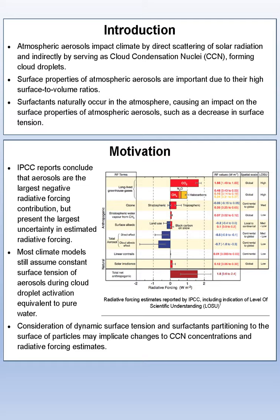To focus on the surface properties of atmospheric aerosols, most climate models still assume a constant surface tension of aerosols during cloud droplet activation equivalent to pure water, but this is only an assumption and has not been experimentally verified. We know that surfactants naturally occur in the atmosphere causing an impact on surface properties of atmospheric aerosols, such as decreasing surface tension. Consideration of this, as well as a dynamic surface tension, may implicate changes on the cloud condensation nuclei concentrations and radiative forcing estimates.